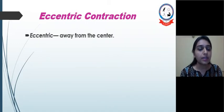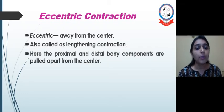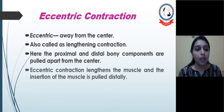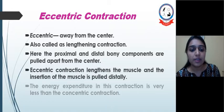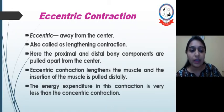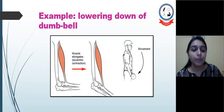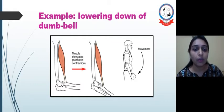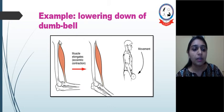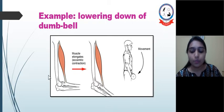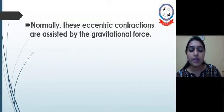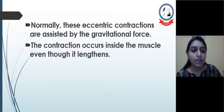Next is eccentric contraction. Eccentric means away from the center — completely opposite to concentric. It is also known as lengthening contraction. The proximal and distal bony components are pulled apart from the center. Eccentric contraction lengthens the muscle and the insertion is pulled distally. The energy expenditure in this contraction is very less compared to concentric contraction. The example is lowering of the dumbbell. If we are lifting the dumbbell that is concentric, and if we are lowering it down that is eccentric contraction of the same muscle — the flexors of the elbow. Normally, eccentric contractions are assisted by gravitational force, though contraction still occurs inside the muscle even as it lengthens.